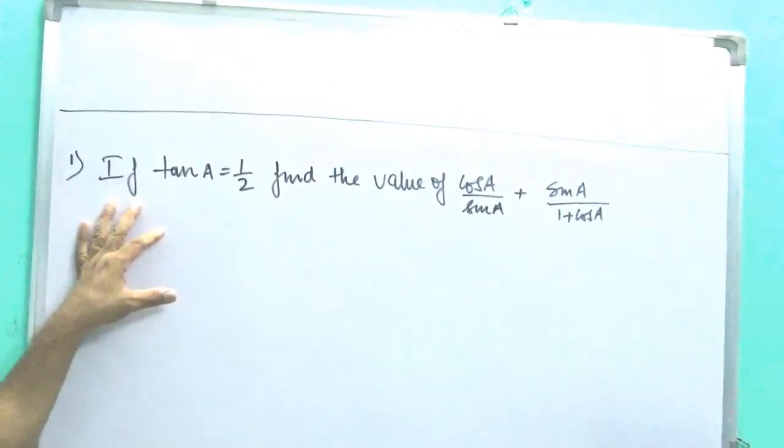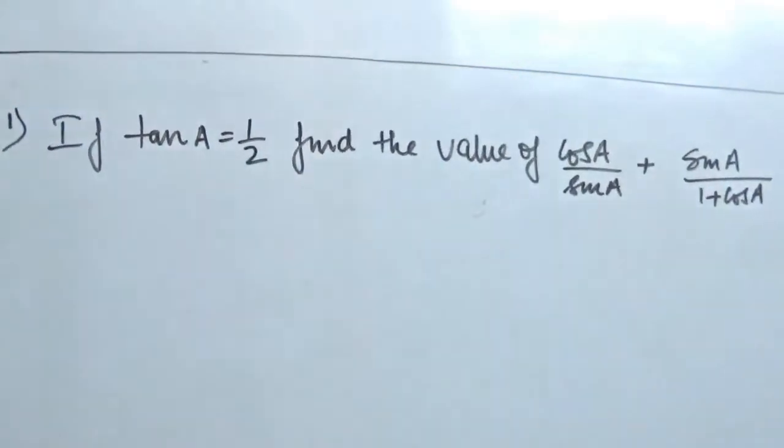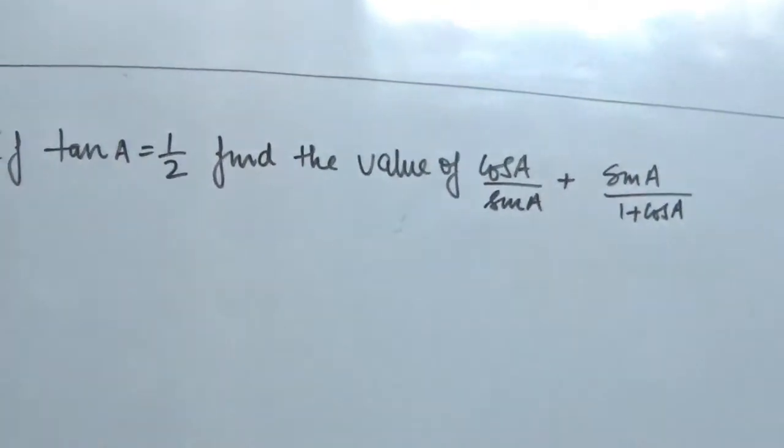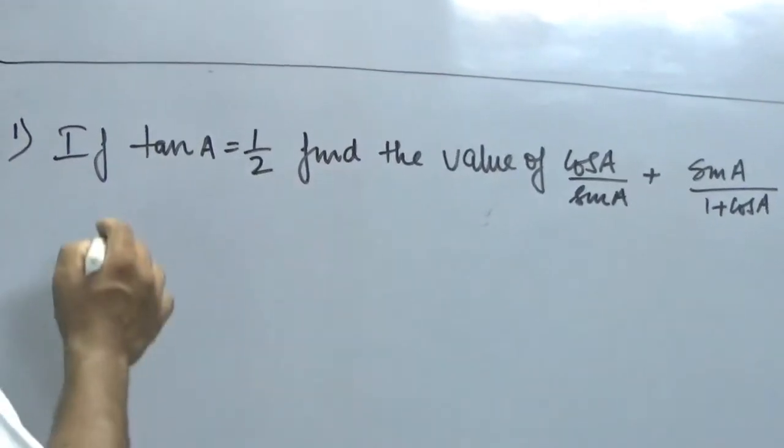The question is: if tan A is equal to 1/2, then find the value of cos A/sin A plus sin A/(1 + cos A). Now to solve this problem there are two methods.